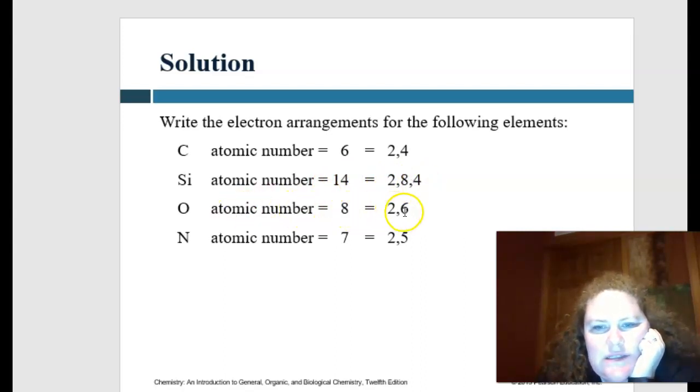And nitrogen would be seven, so we have to have two in the first. And then the remaining five would be in the second.